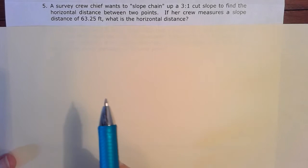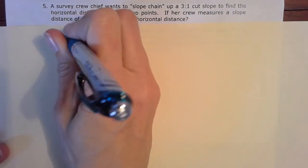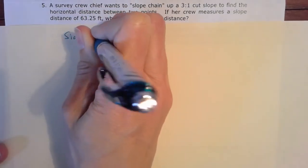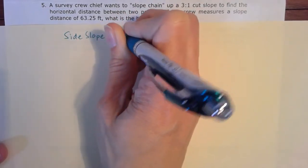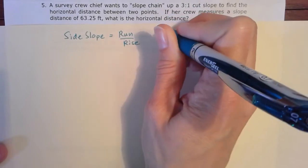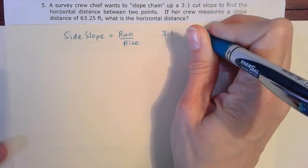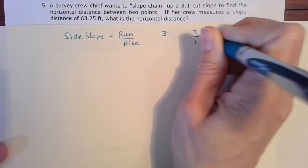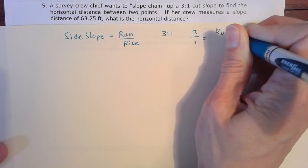So we can tell by the way that this is written that this is a side slope. And remember that a side slope means run over rise. So we're told that the side slope is three-to-one. So we can rewrite that as three over one is going to equal some run over some rise.